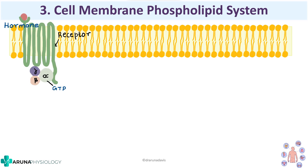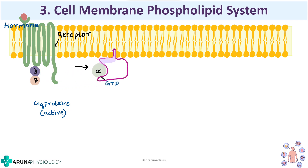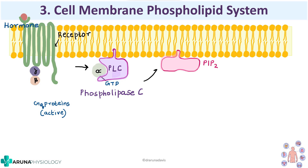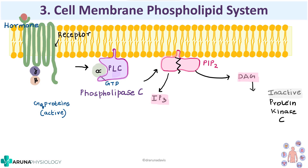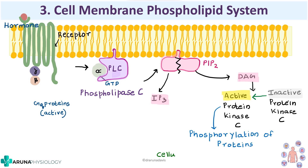Next is the cell membrane phospholipid system. When a hormone binds to the receptor, it activates G proteins — specifically the GQ proteins. The alpha subunit dissociates and activates the enzyme phospholipase C. Phospholipase C cleaves a cell membrane phospholipid called phosphatidylinositol diphosphate (PIP2), splitting it into DAG (diacylglycerol) and IP3 (inositol triphosphate). DAG activates inactive protein kinase C, converting it to active protein kinase C, which causes phosphorylation of proteins and cellular response.